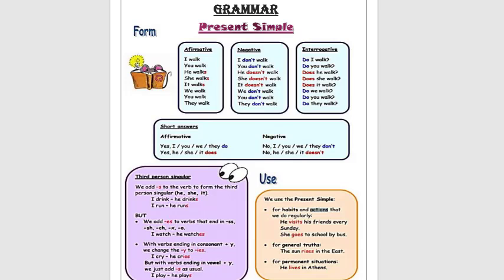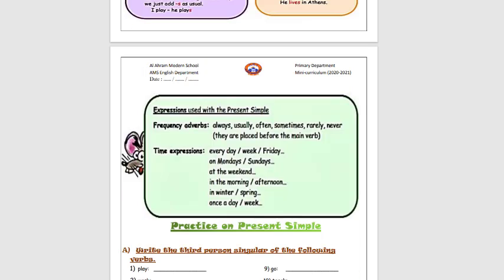We use the present simple tense for habits and actions that we do regularly — like 'He visits his friends every Sunday' or 'She goes to school by bus.' The second reason is for general truths: 'The sun rises in the east.' The last usage is for permanent situations: 'He lives in Athens.' Let's check together the frequency adverbs — these are the keywords for this tense.